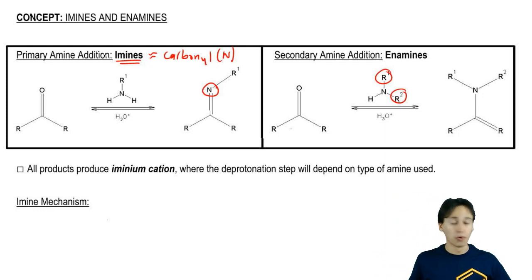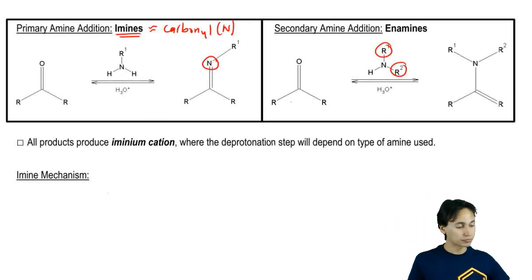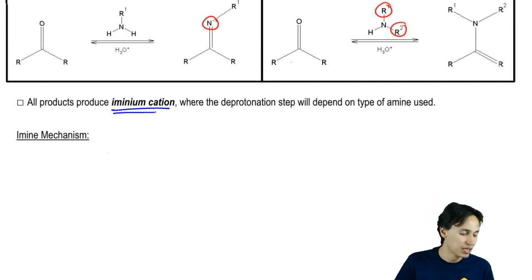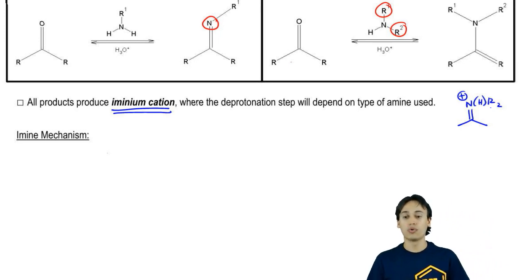We're going to go through both of these mechanisms. I do want to say one thing really quick that both of these mechanisms are going to pass through a very important intermediate. That intermediate is called the iminium cation. The iminium cation looks like this: it's a nitrogen with a double bond and with two things on it, so either H's or R's and a plus charge. We're always going to pass through the iminium cation, and then how we resolve that cation is what determines whether it's going to be an imine or an enamine. Let's go ahead and look into the mechanism of an imine.